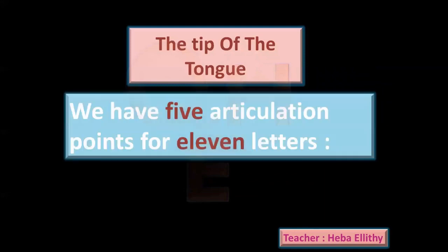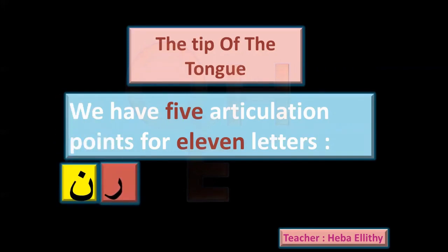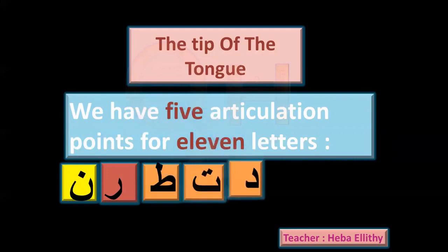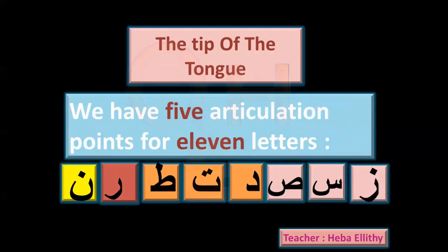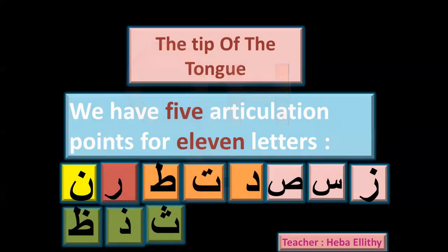What are these letters? We have letter noon — this is our first articulation point. We have letter ra — this is our second articulation point. We have letter ta, tha, and dal — one articulation point, three letters come from it. We have letter sad, sin, and za — one articulation point for these three. That gives us four articulation points. Our fifth articulation point is for the letters dha, dhal, and thha. The second articulation point is for letter ra, and this is our class for today.